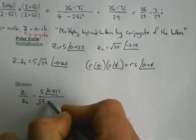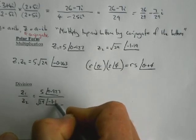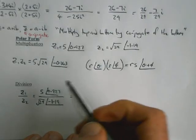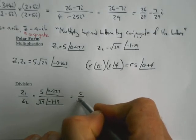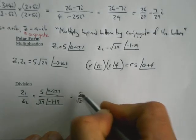The second one is root 29 with an angle of negative 1.19. Then all we do is divide our fractions, so 5 over root 29. You can work it out as a decimal if you want to, but you don't need to.